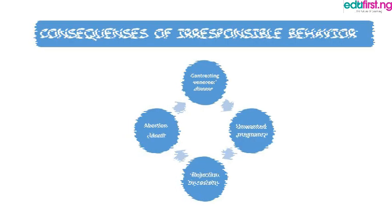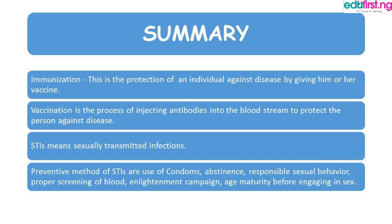In summary: immunization is the protection of an individual against disease by giving him or her a vaccine. Vaccination is the process of injecting antibodies into the bloodstream to protect the person against diseases. STIs means sexually transmitted infections. The preventive methods include use of condoms, abstinence, responsible sexual behavior, proper screening of blood, enlightenment campaigns, and age maturity before engaging in sex.